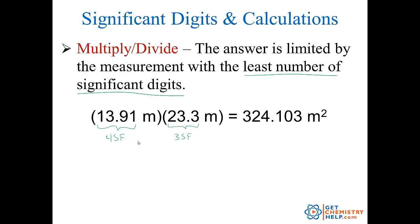If I put in a number precise out to four, multiplied by one precise out to three, it wouldn't make sense that my answer could suddenly have six significant digits. I'm limited to whatever the least precise number was. The least precise was three, so this can only have three significant digits. So 324.103 rounds off to 324 meters squared.